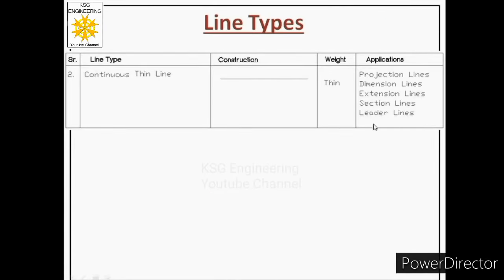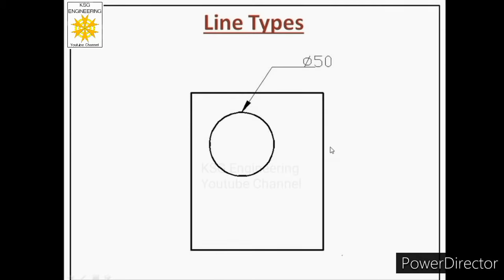The next application is the leader line. It consists of an inclined line with an arrowhead at one end pointing towards a particular entity in the drawing, and a tail on the other end on which some information is given about that entity. Whenever we draw a leader during dimensioning, it must be drawn with continuous thin line.